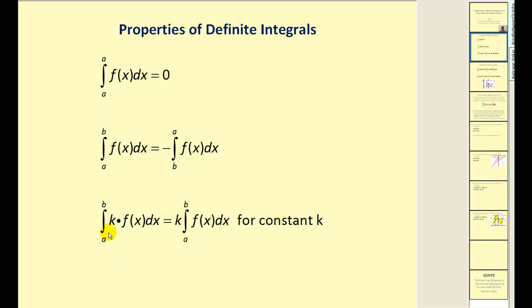If we have the definite integral of k times a function, we can factor out the k and the result would be k times the value of the definite integral.